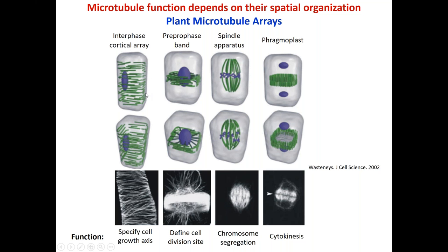The microtubule cytoskeleton undergoes dramatic reorganizations during cell division. In plants, one unique structure is the band of microtubules called the pre-prophase band, which accurately defines the cell division site that will be laid down later in cytokinesis. The spindle apparatus is still involved in chromosome segregation as in other eukaryotes. The cytokinetic apparatus in plant cells is not an actin-myosin-based pinching mechanism, but rather a microtubule-based structure called the phragmoplast, which starts as a disc between the two daughter nuclei and expands outward to guide deposition of a new cell wall or cell plate that physically divides the two daughter cells.